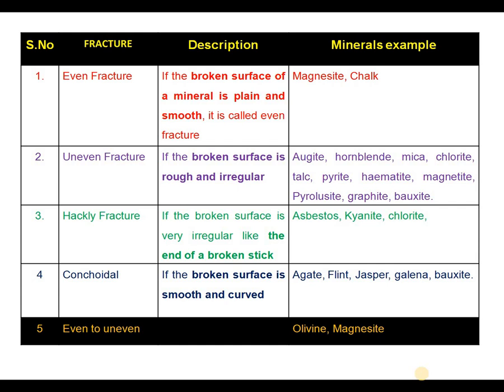Even-to-uneven fracture can be seen in case of alumin or magnesite. That means we can find even fracture to some extent, and uneven fracture can also be seen in both minerals such as alumin and magnesite.